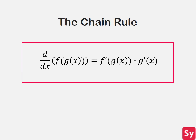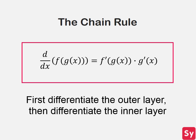Here is the chain rule. Given a function f of g of x, the derivative of that function is f prime of g of x times g prime of x. What we are doing is differentiating the outer layer and not touching the inner layer, then we differentiate the inner layer and multiply them together.